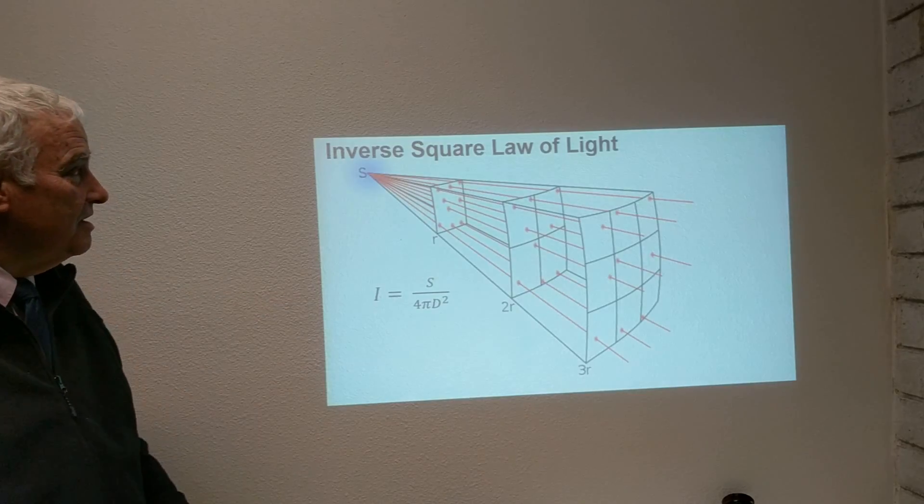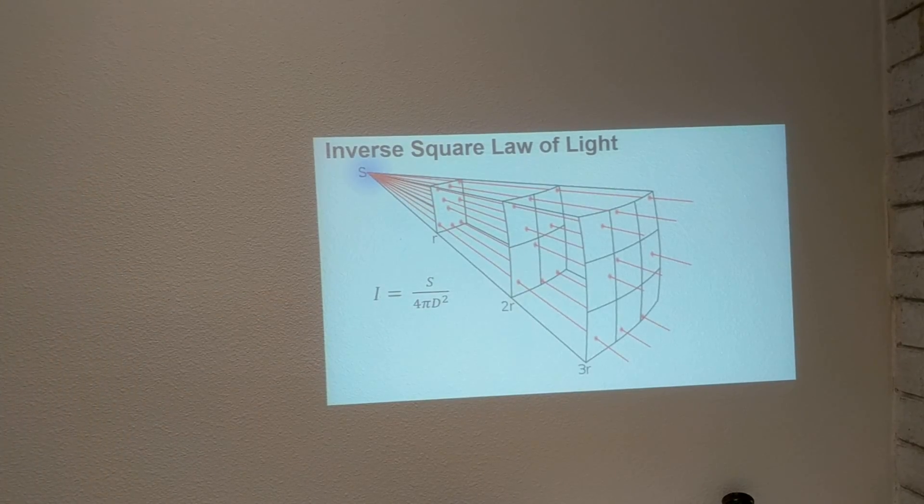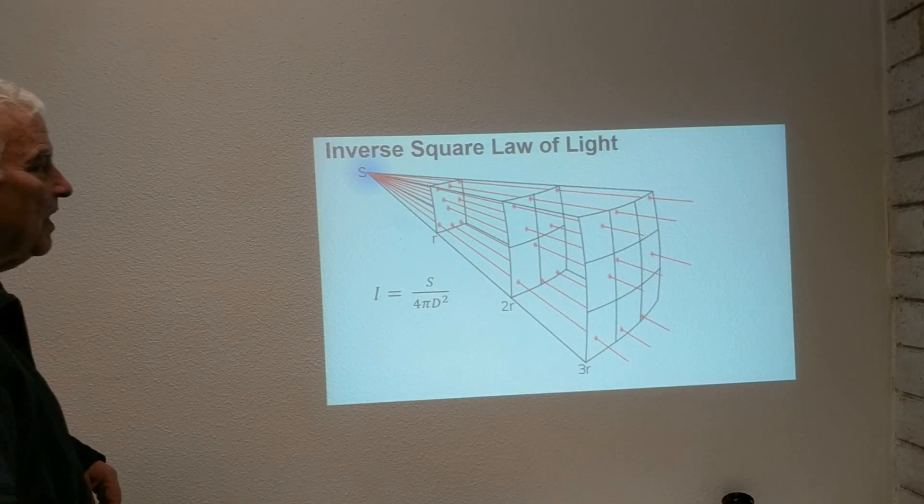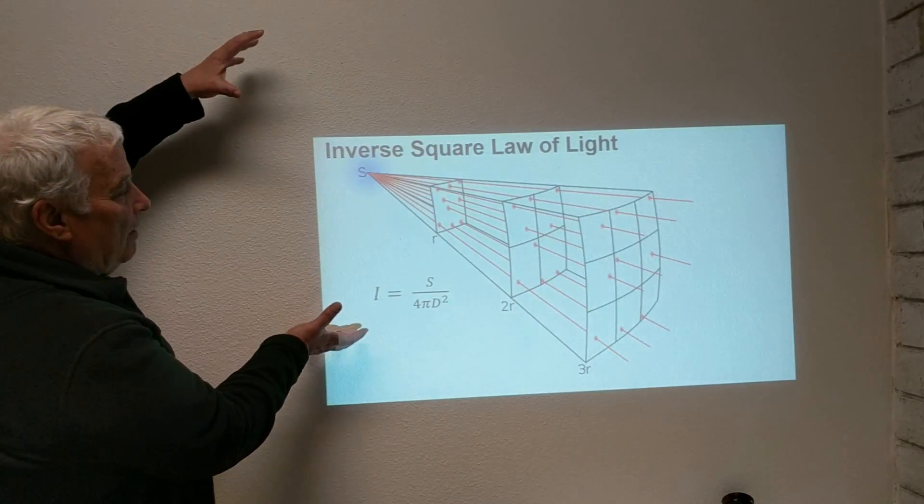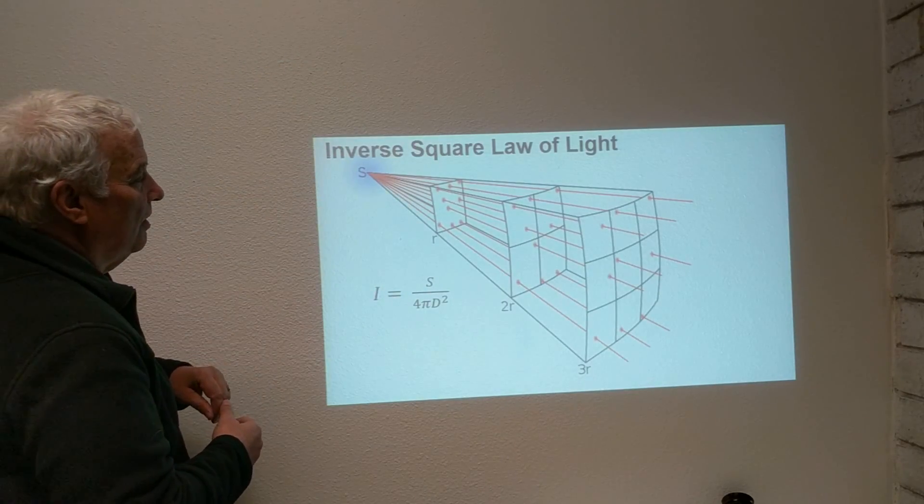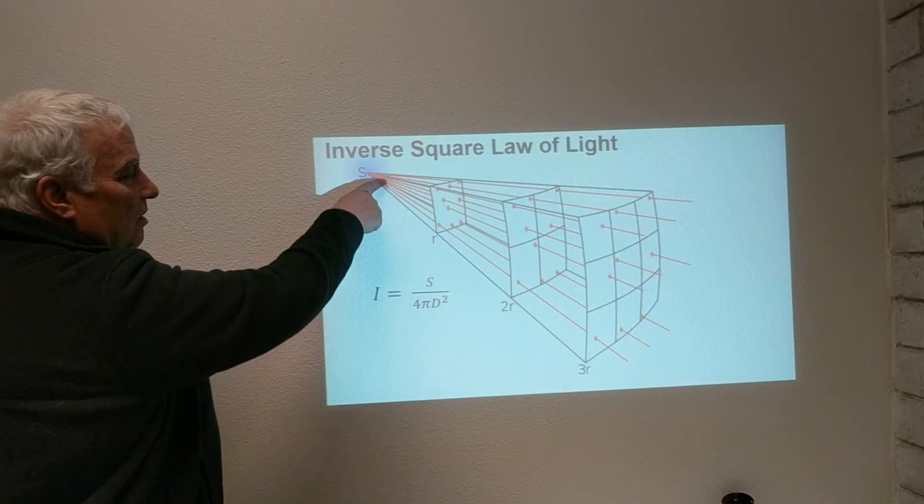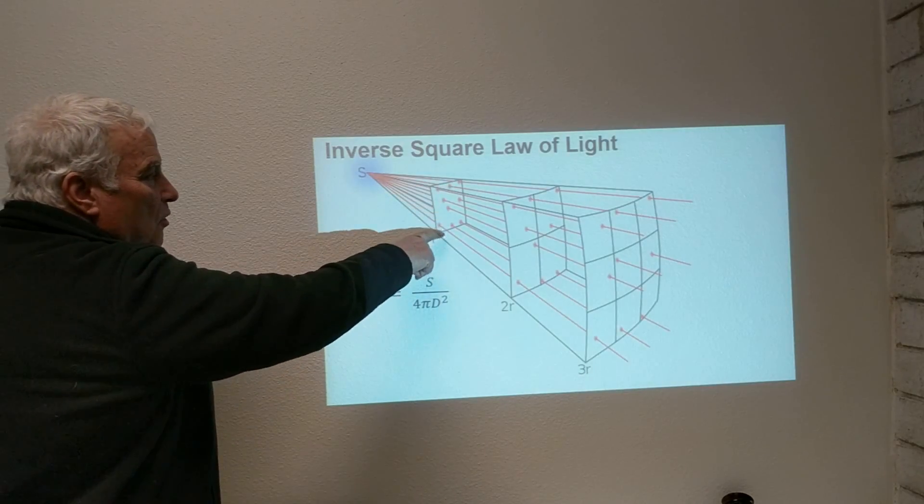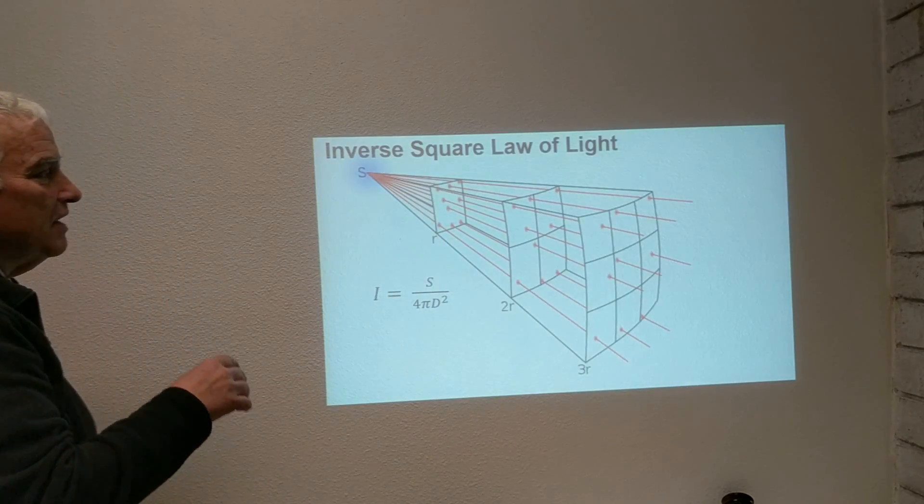A good way to visualize this is to imagine a sphere surrounding the source located a distance r here, and light rays coming from the source, they go through this sphere. Think of it as a window in this sphere of radius r.